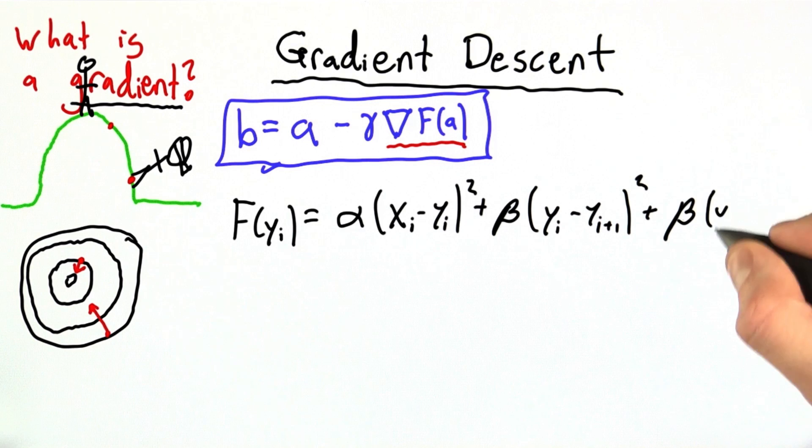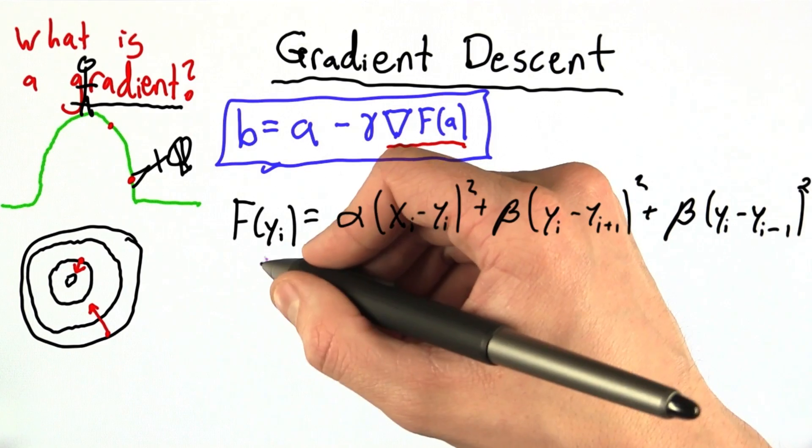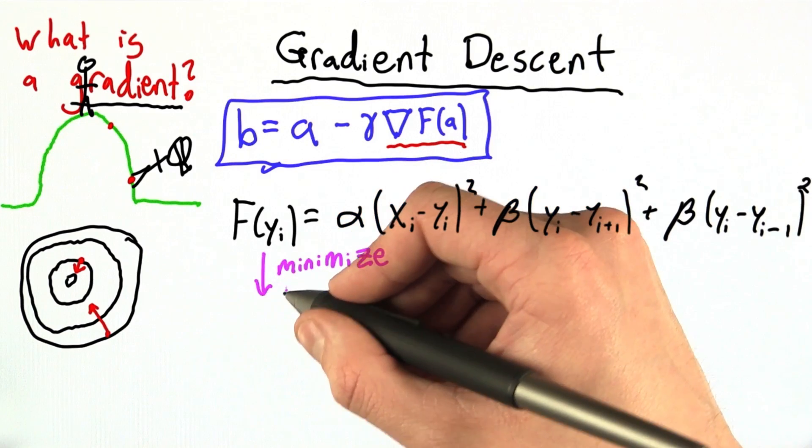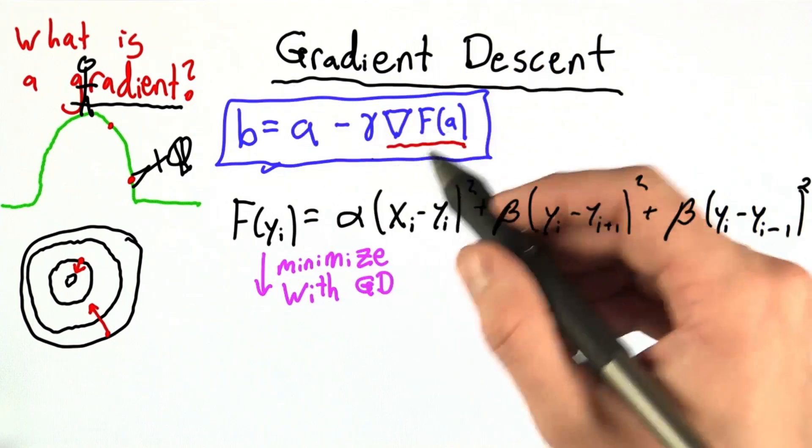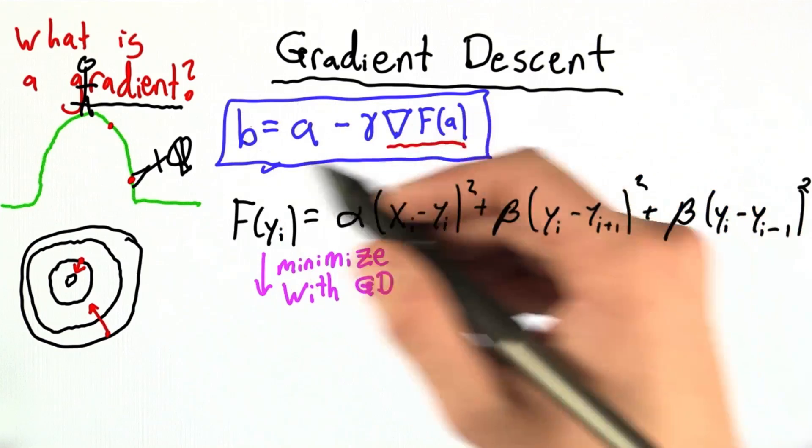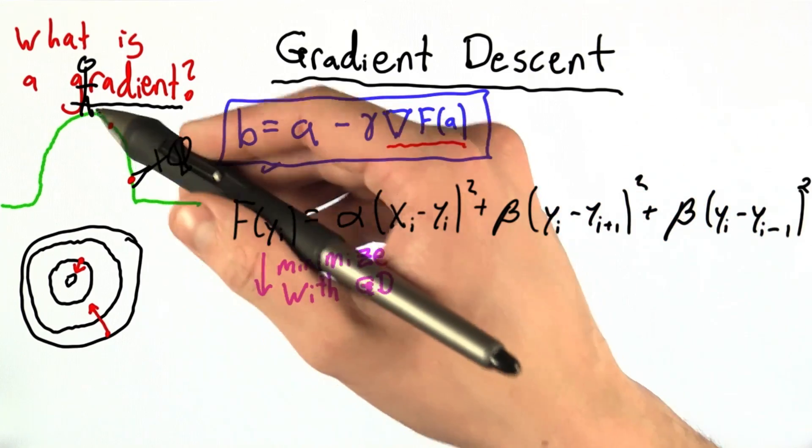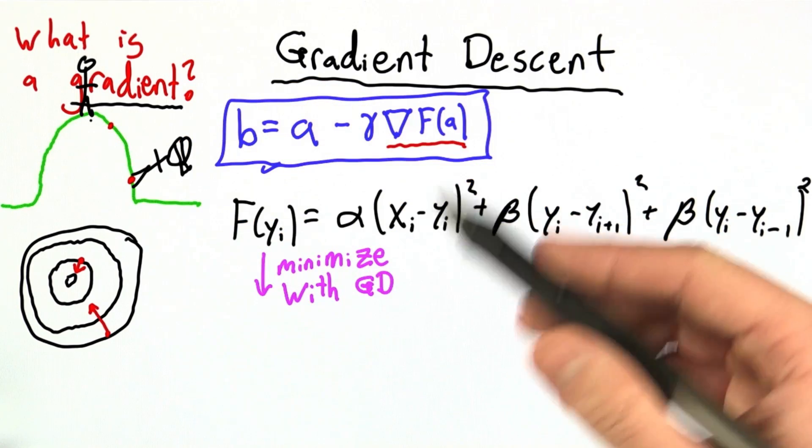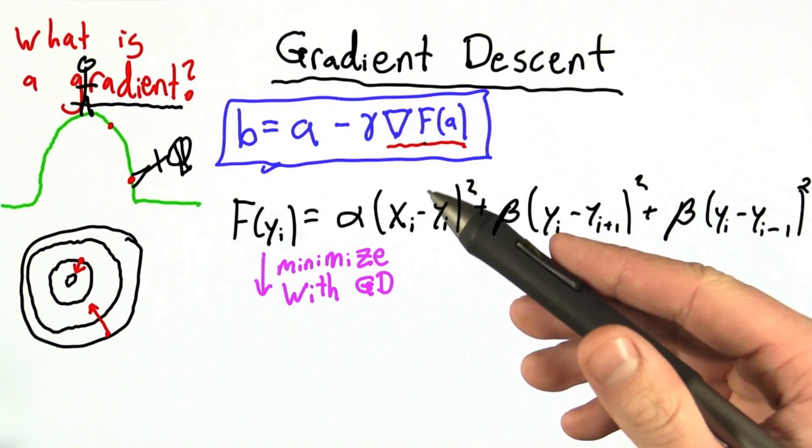And we also do the same for the previous y-coordinate, so yi minus 1. So we want to minimize this, and we're going to use gradient descent. Well, gradient descent says that we should just iterate over this process until we get to a sufficiently shallow slope that we're confident we're in the bottom. We've really found a minimum.